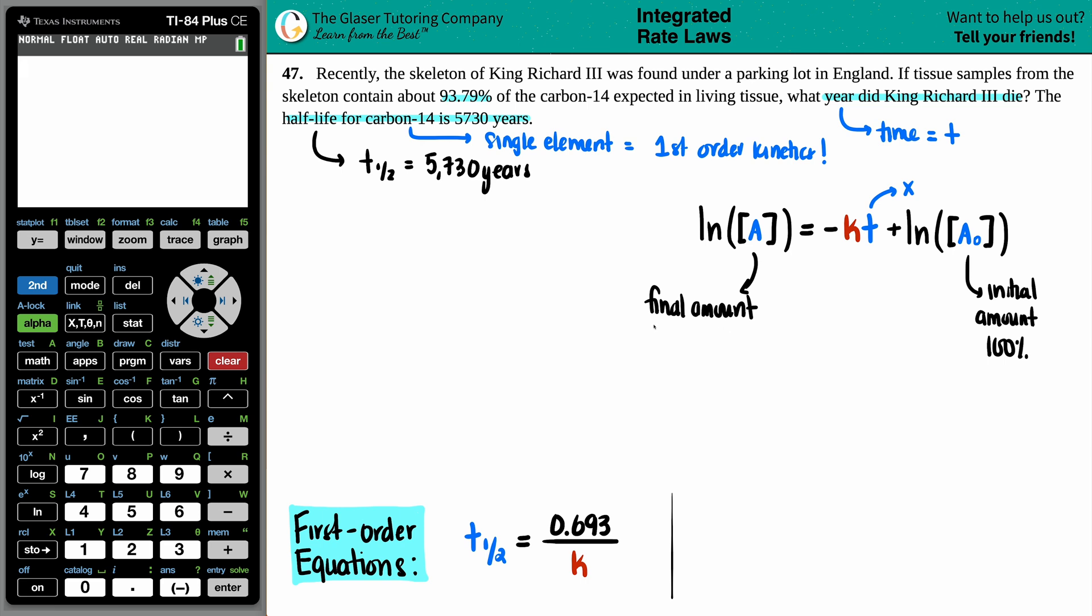This one is your final amount. And in this case, it's always the final amount that's remaining. It's not the ones that have been gone. So if we just read the question again, it says the tissue sample from the skeleton contained about 93.79 percent of that carbon-14. So this is how much of the carbon-14 is left over. That's how much is remaining. So we know that this value is going to be 93.79. We're solving for x, which is t. But if we can use this formula, we need to have that k value. And the k value is the rate constant. But unfortunately, they didn't give us the rate constant. So what are we going to do?